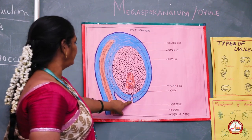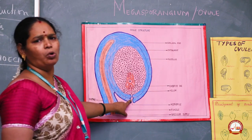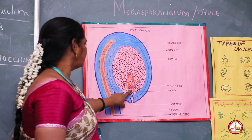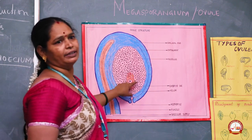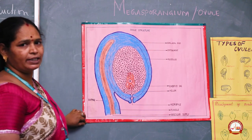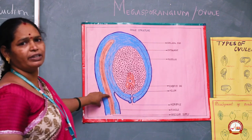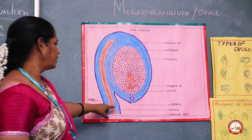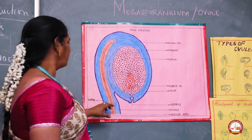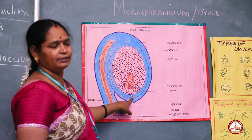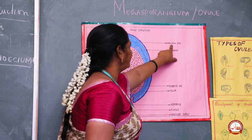Apart from that, there is the micropyle. In the anatropous ovule, the micropyle has a small opening present between the integuments. The integuments are the outer covering, which are two in number. If one integument is present, the ovule is called unitegmic. If two integuments are present, we call this ovule bitegmic. The micropyle is a very minor opening where fertilization can occur after. Opposite to the micropyle, there is an end called the chalaza.